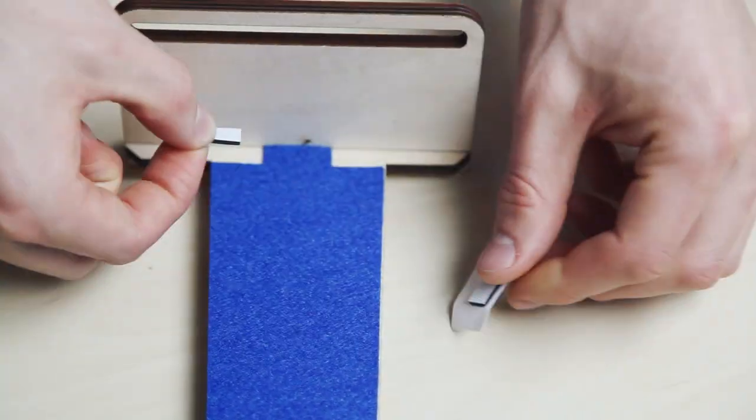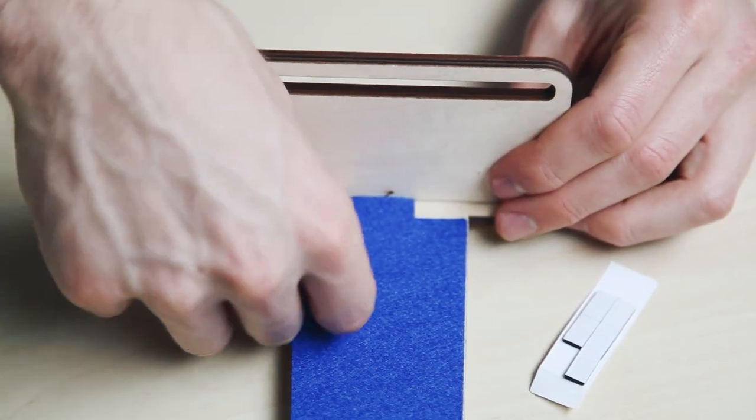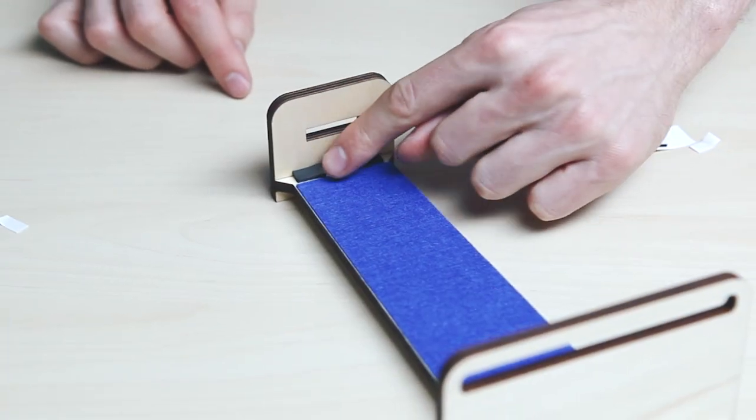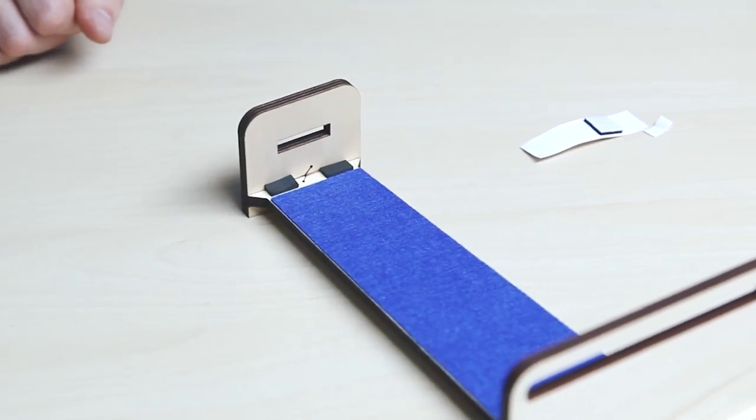Attach four pieces of double-stick foam to your base piece, two on each side of the felt. Make sure that there's a space between the two pieces of sticky foam on the side without the tab.